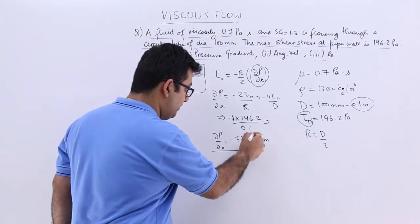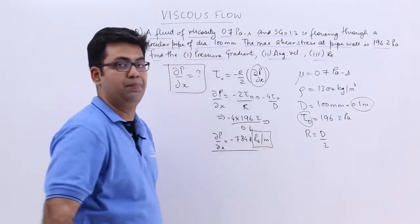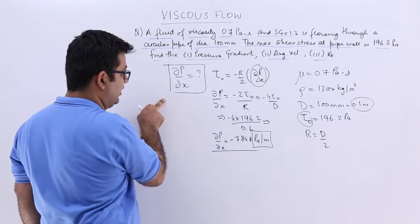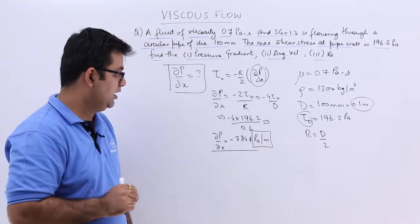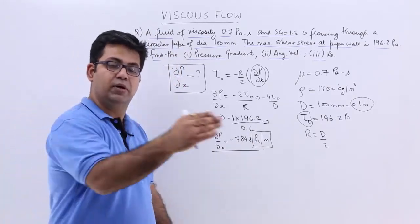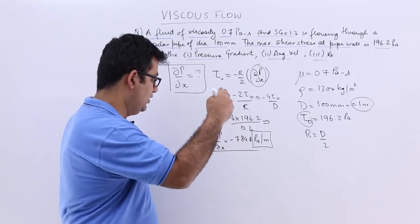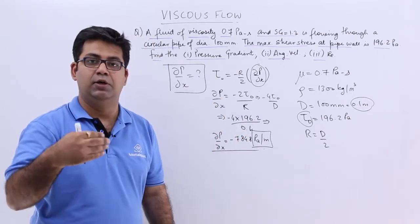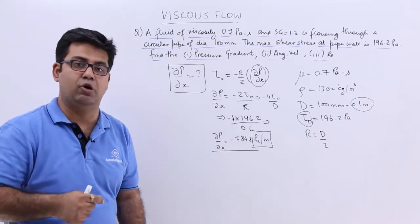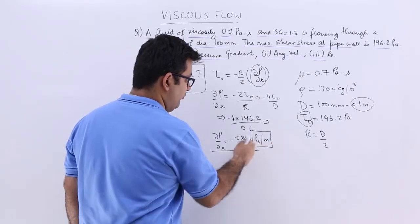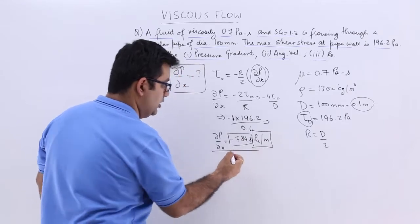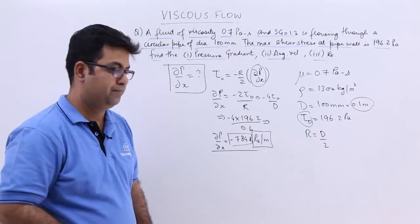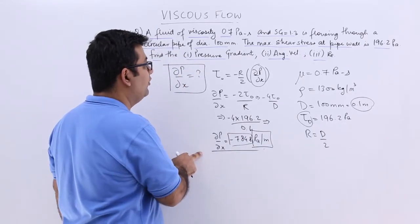Remember this, units are very important. So this is pressure gradient, that is the variation of pressure per unit length. So you can see, as you move along, the pressure starts to reduce. So there is some pressure drop. So if you move 1 meter, this much Pascals of pressure would have dropped. So we are done with this.